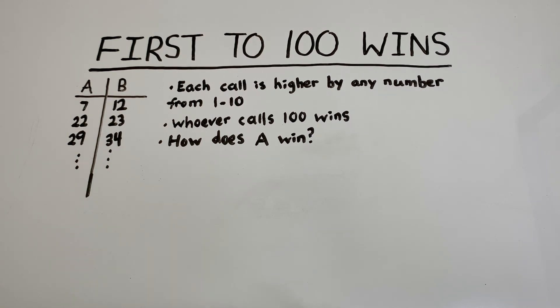A and B are just going to go back and forth with each person calling a number 1 through 10 higher than the number that was previously called. So this could be a possible sequence: 7, 12, 22, 23, 29, 34, so on and so forth.